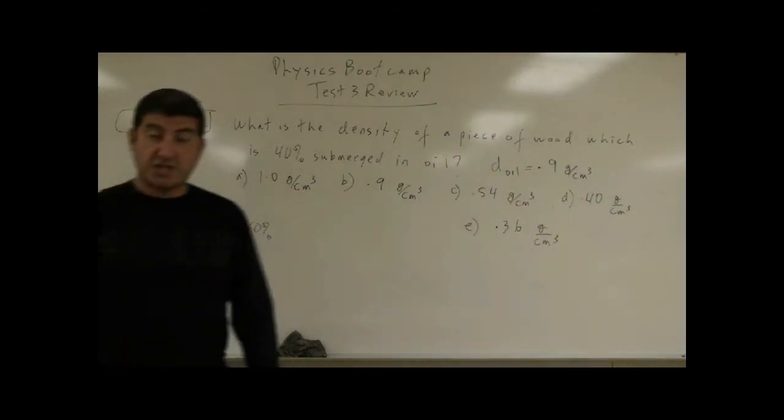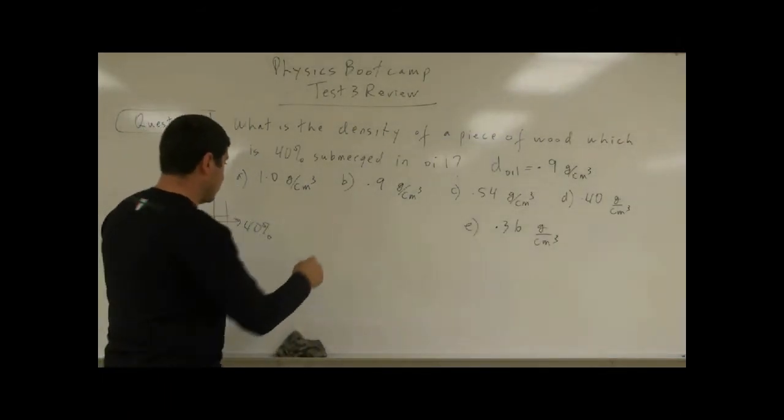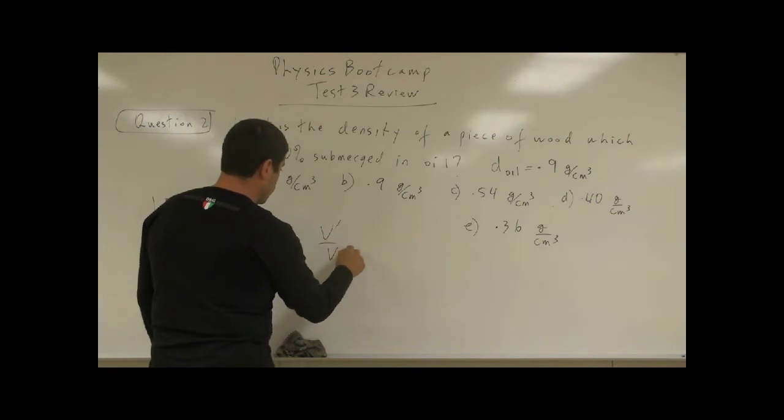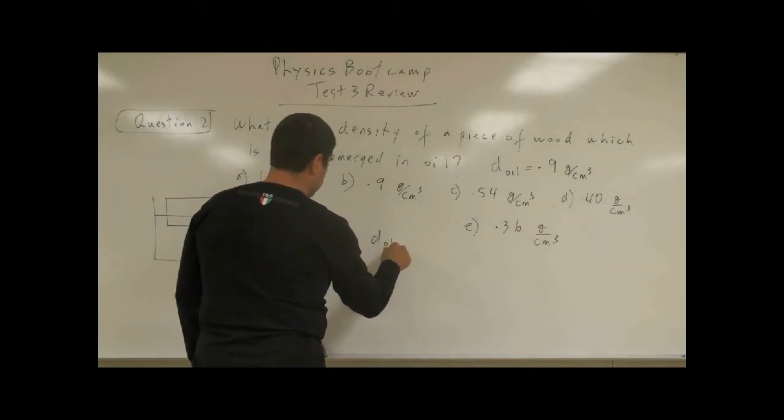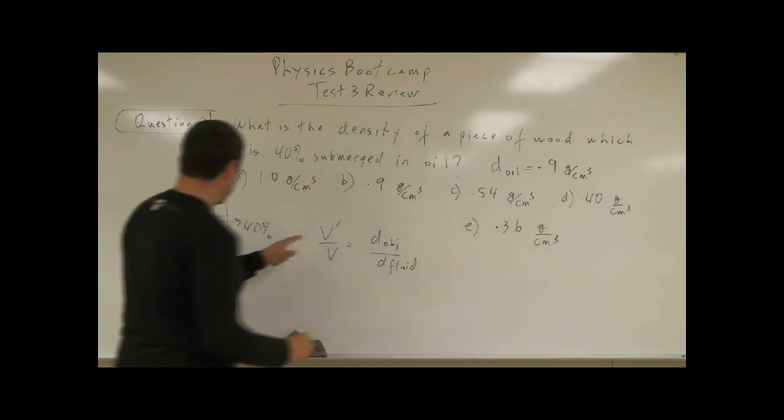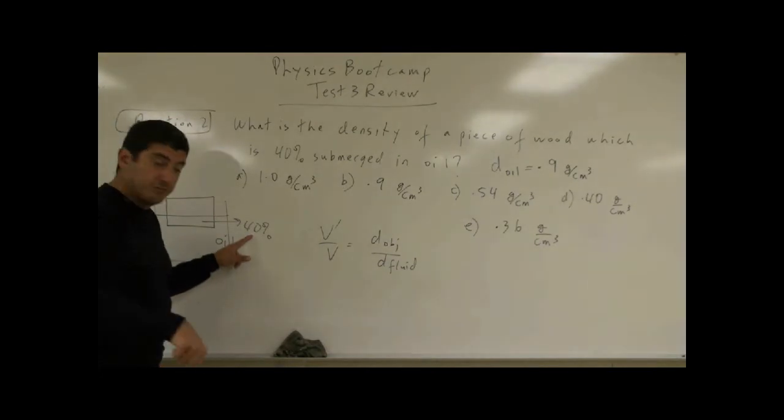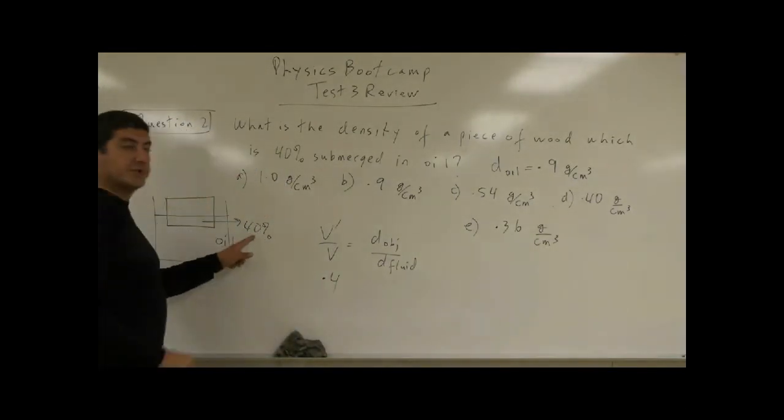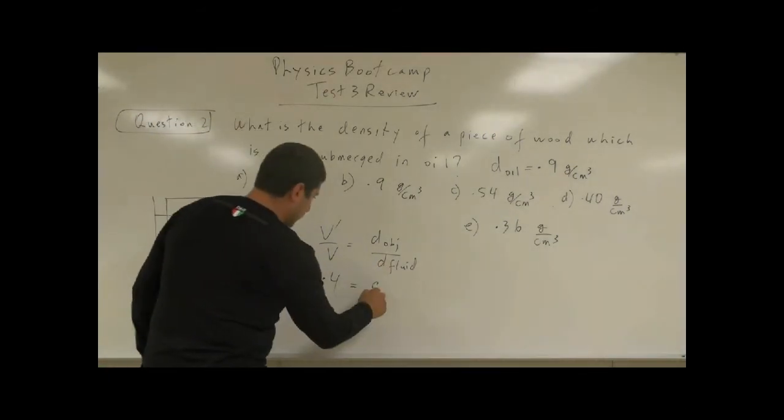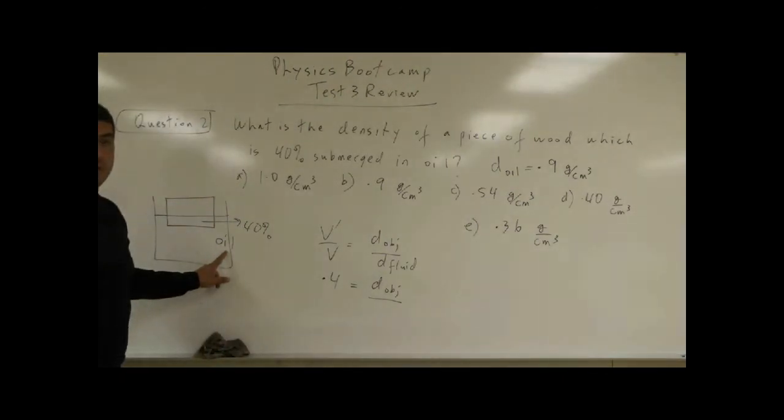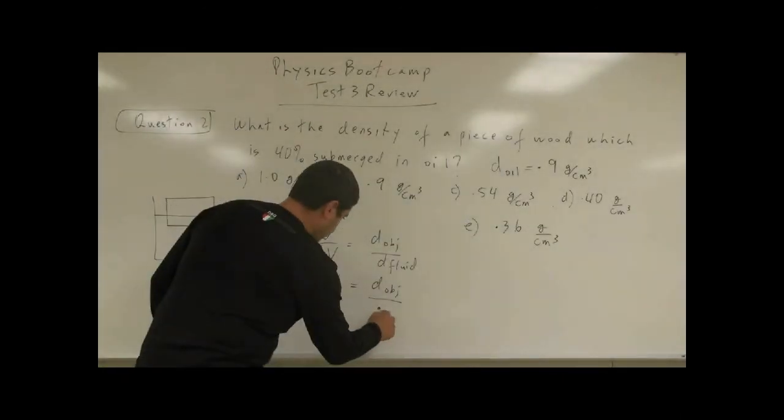So we said in the earlier problem that the volume prime over V is equal to density of the object divided by density of the fluid. So V prime is the 40% which is submerged. So that's 0.4. 40% in decimal notation is 0.4. What's the density of the object? We don't know. What's the density of the fluid? In this case, the fluid is oil. So 0.9.